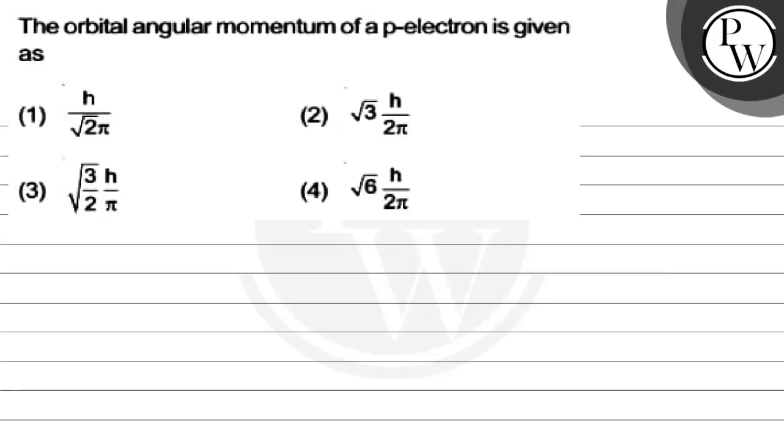Hello watchman, let's read this question. The orbital angular momentum of a p electron is given as: option 1 is h by root under 2 pi, option 2 is root under 3 into h by 2 pi, option 3 is under root 3 by 2 h by pi, option 4 is under root 6 h by 2 pi.